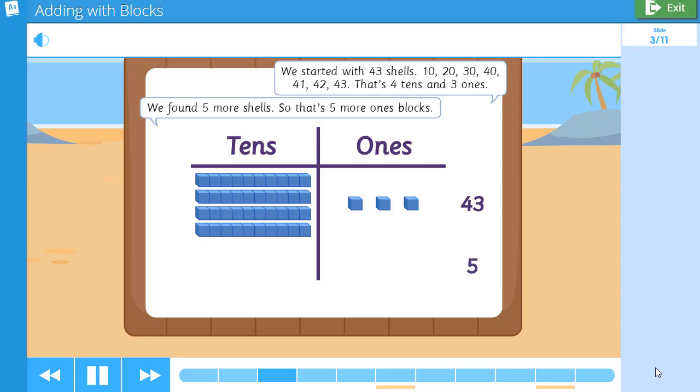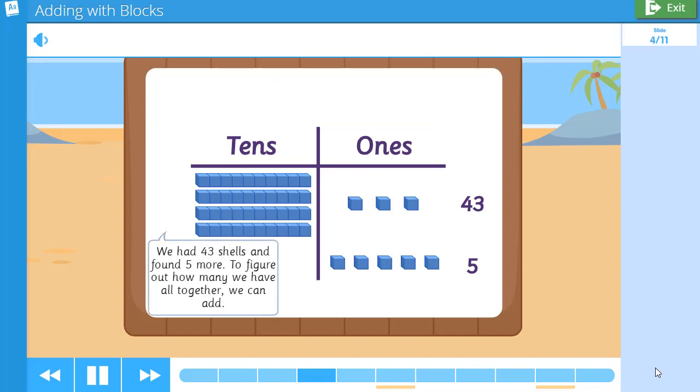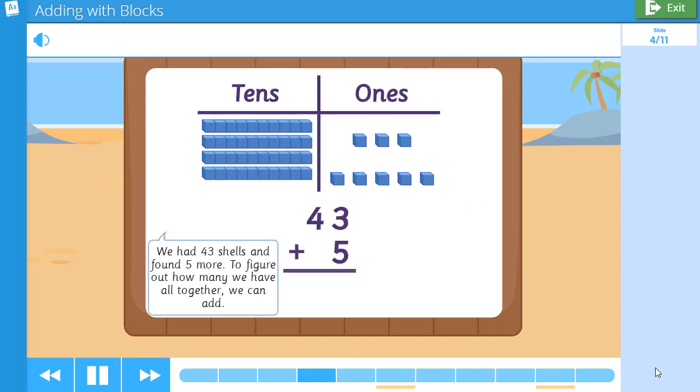We found five more shells. So that's five more ones blocks. We had 43 shells and found five more. To figure out how many we have all together, we can add.